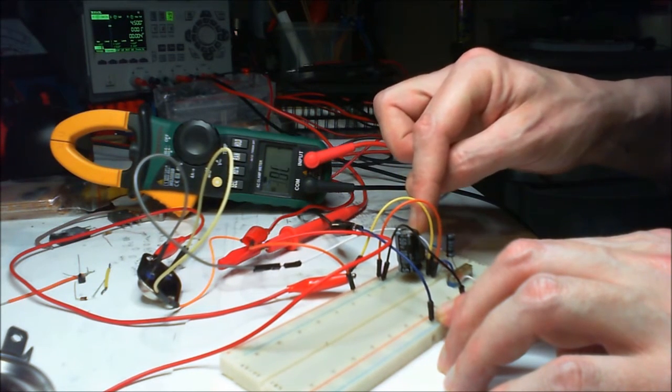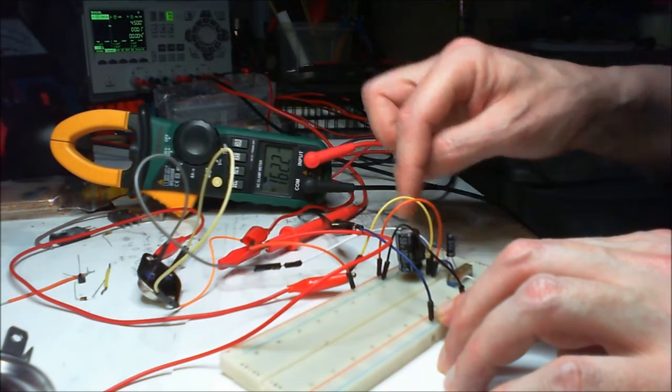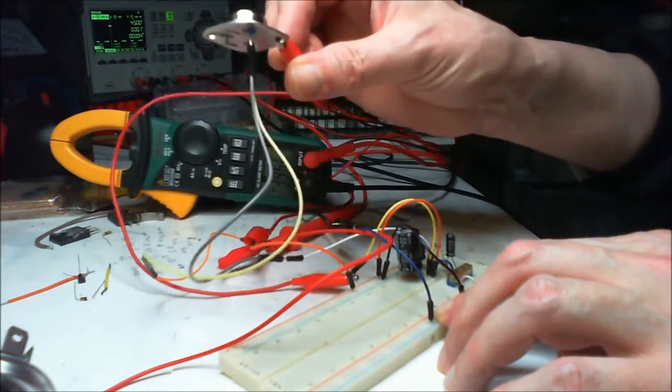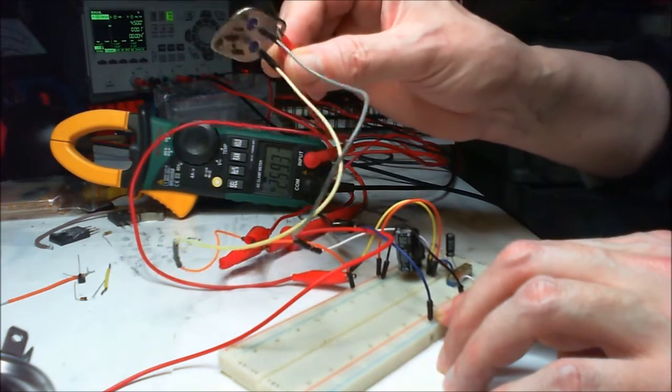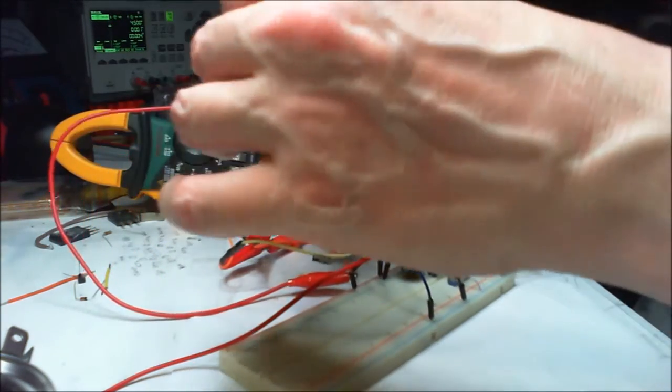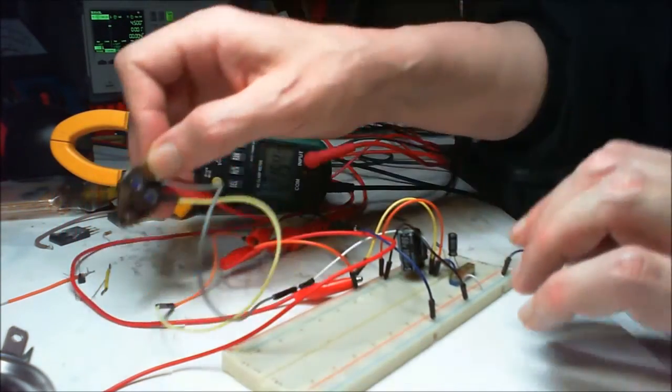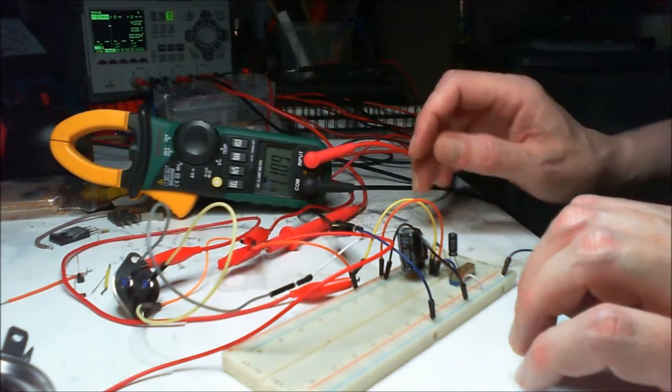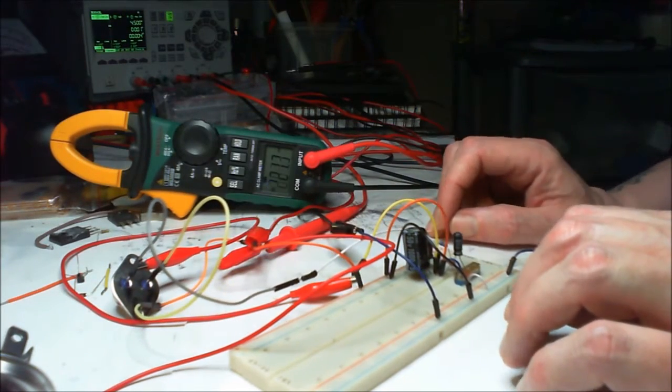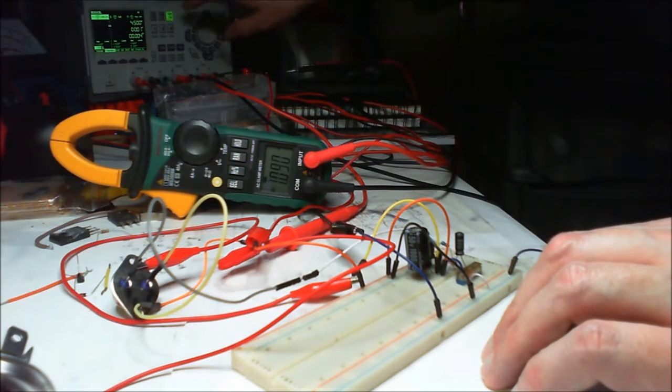What it does is, instead of the amperage going through this regulator, it goes through this instead. This is a 2N3055, which means it can handle a lot more voltage.